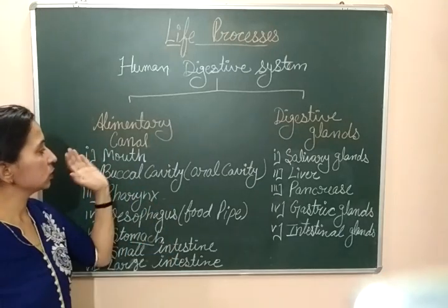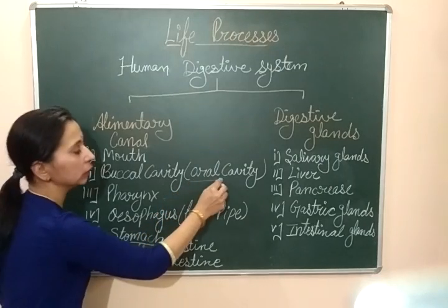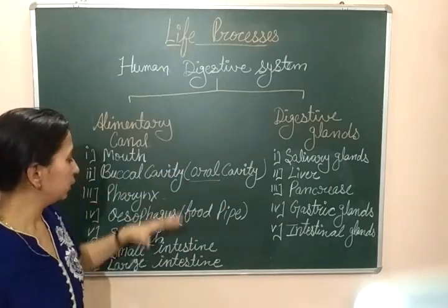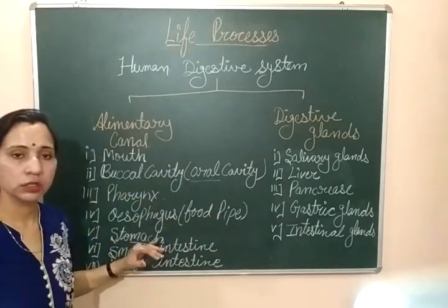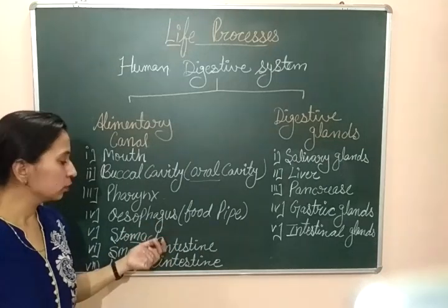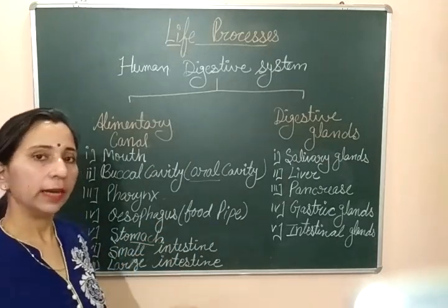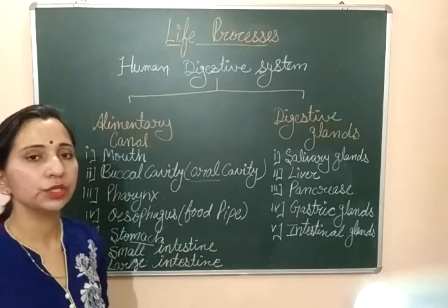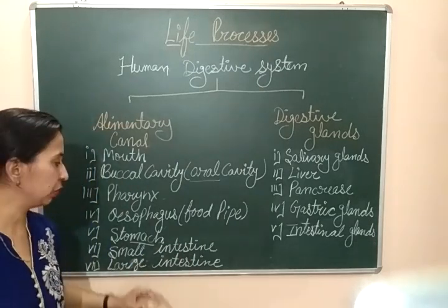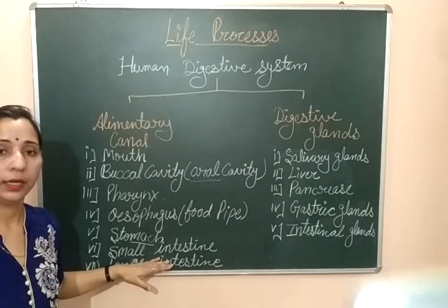The digestion process starts within our oral cavity. After that, digestion continues in the stomach. Some part of the food gets digested in the stomach and then that semi-digested food is transported to the next part of the alimentary canal, which is the small intestine.